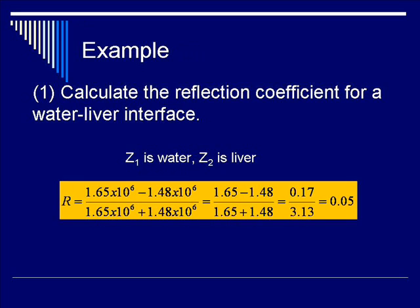As we go on, plug in the numbers. For water, we know that the impedance is 1.48 times 10 to the 6. The impedance for liver is 1.65 times 10 to the 6. So if you subtract 1.48 from 1.65 in the numerator, and add 1.48 to 1.65 in the denominator, you will get a ratio of 0.17 over 3.13. The resulting reflection coefficient is 0.05.